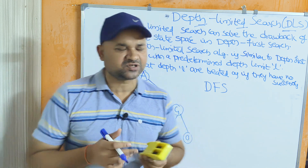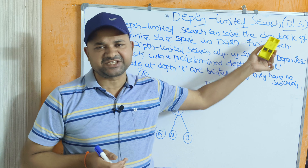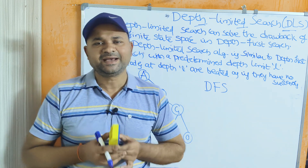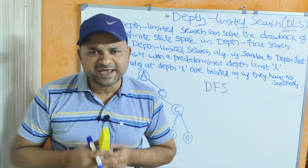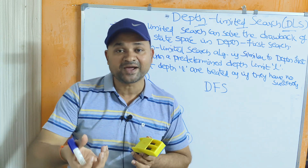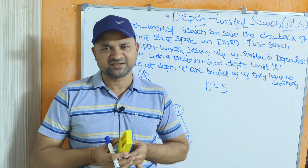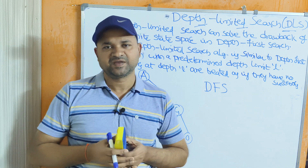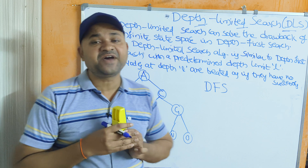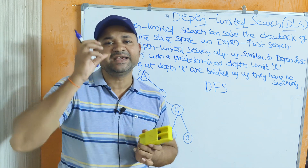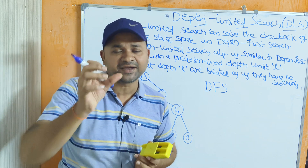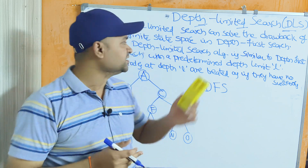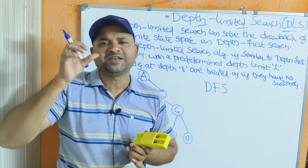Let us discuss Depth Limited Search, or DLS, in artificial intelligence. DLS is mainly useful to overcome the drawback of Depth First Search (DFS). The major drawback of DFS is that if the state space is infinite — meaning the tree contains an infinite number of nodes — then DFS may not give us the goal state. To overcome that problem, we use Depth Limited Search.